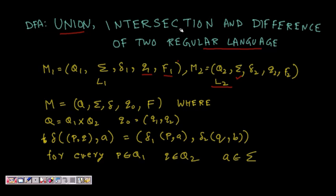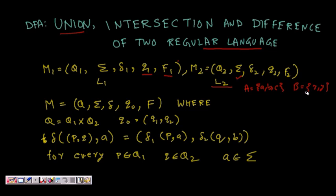To find the union, intersection, or difference of these two regular languages, our automaton will have states which are the cross product of the two. So if the first automaton has three states and the second has four states, there will be 3 times 4 = 12 states total. For example, if A = {a, b, c} and B = {x, y}, then A cross B = {(a,x), (a,y), (b,x), (b,y), (c,x), (c,y)}.